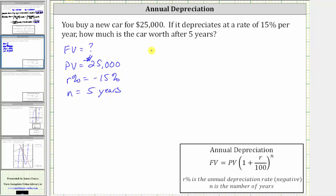Which means the future value, FV, is equal to the present value of 25,000, times the quantity one plus R divided by 100 is going to be negative 15 divided by 100, raised to the power of N, which is five.